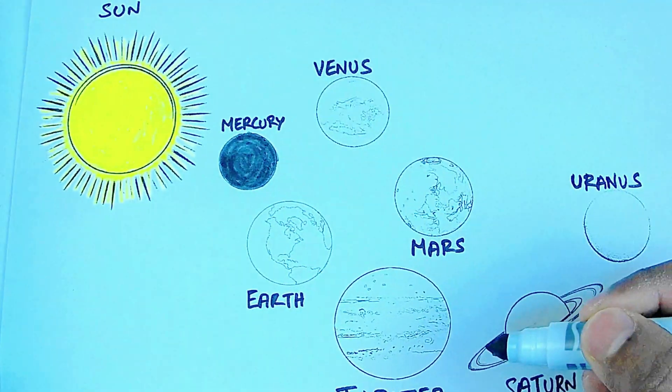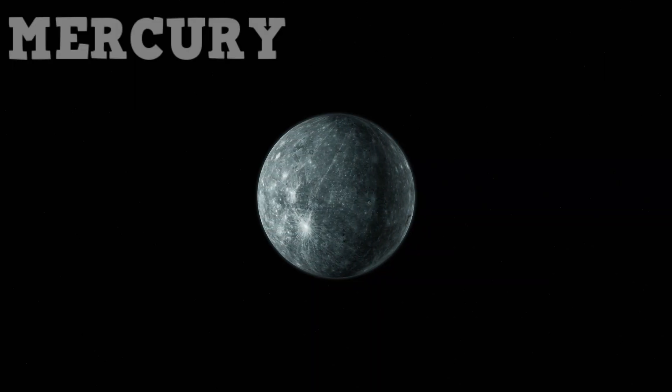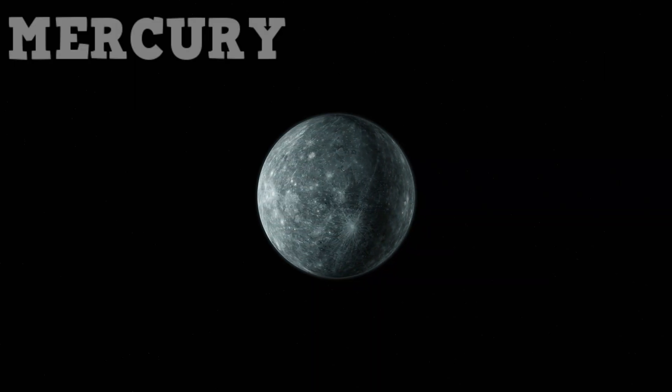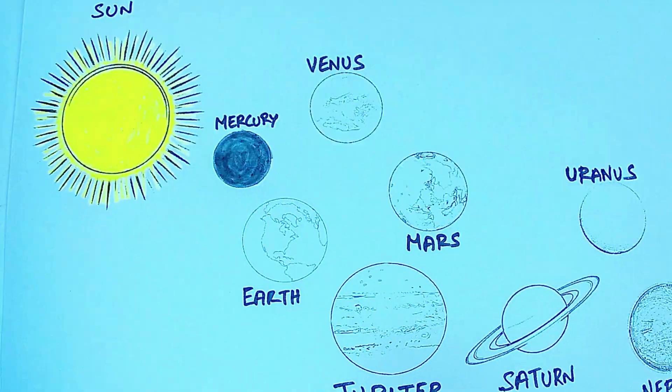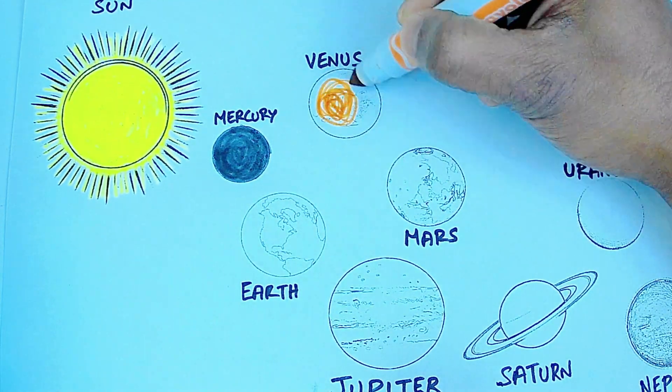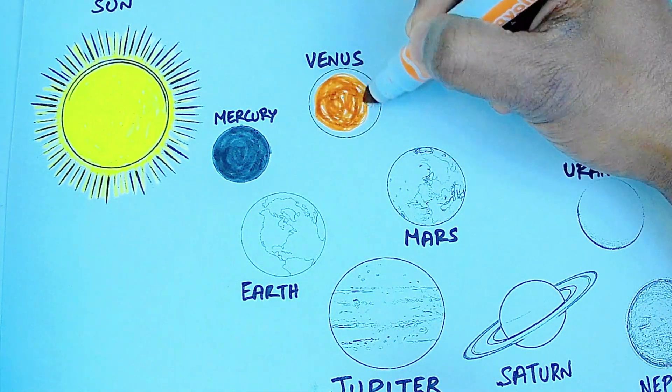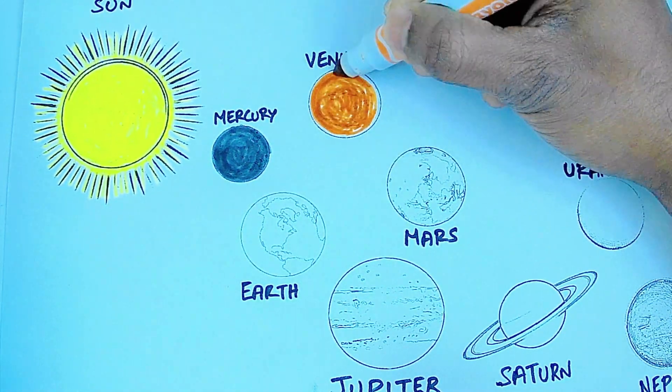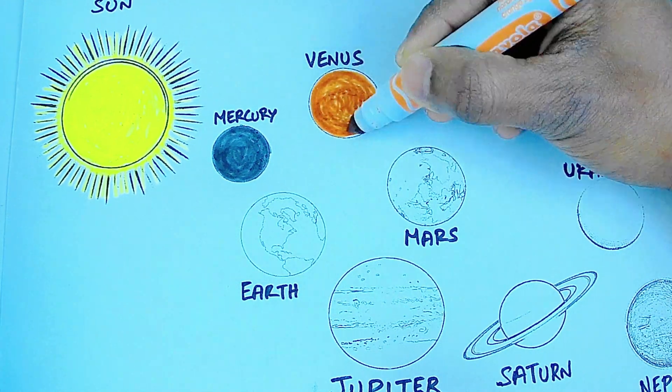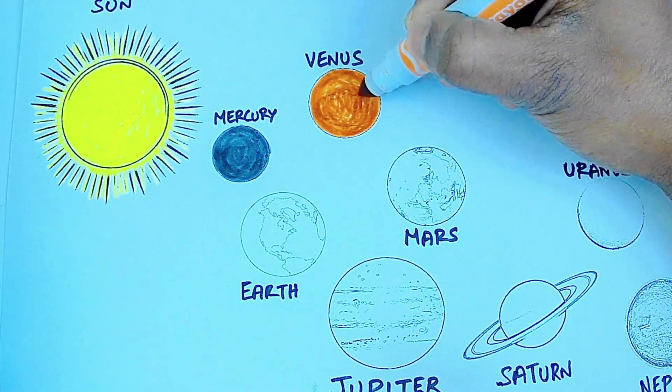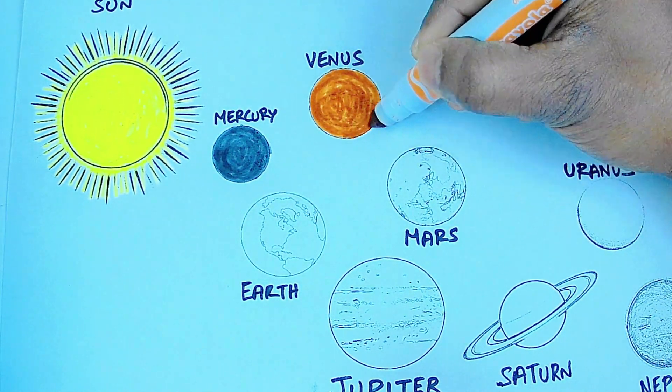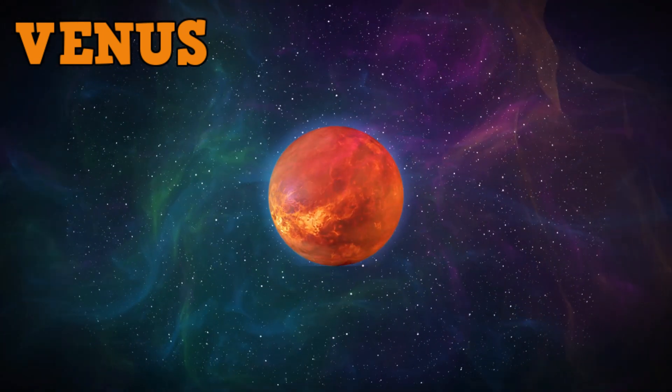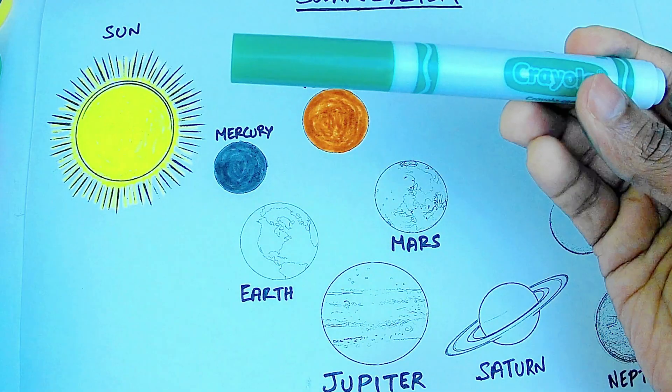Orange color Venus. Venus is the second planet from the Sun. It is the hottest planet.